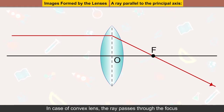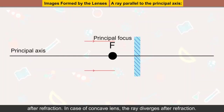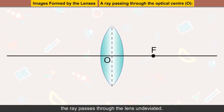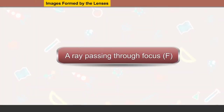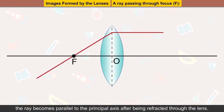In the case of a concave lens, the ray diverges after refraction. A ray passing through the optical center O passes through the lens undeviated. A ray passing through focus F becomes parallel to the principal axis after being refracted through the lens.